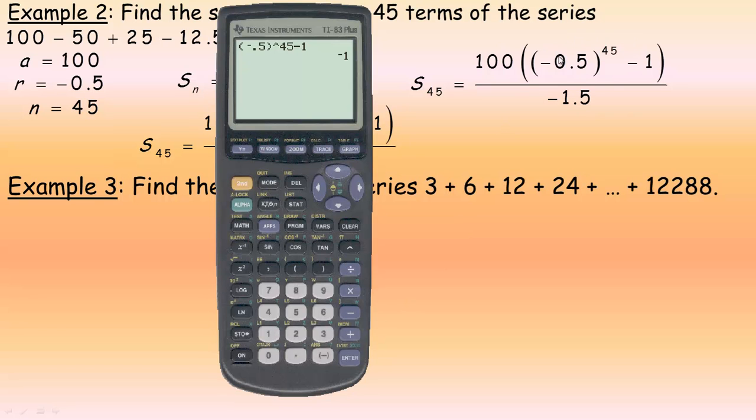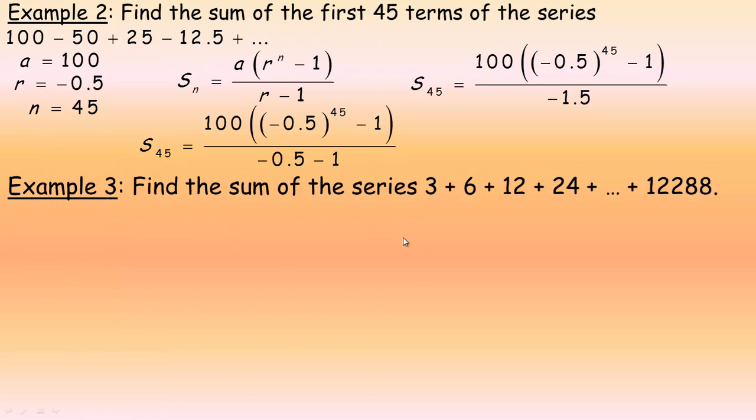So, that's what's in here. And then multiply by 100. And then divide by the negative 1.5 in the denominator. So, you get 66.6 repeating. So, that's the sum of the first 45 terms. It's 66 and 2 thirds or 0.6 repeating.